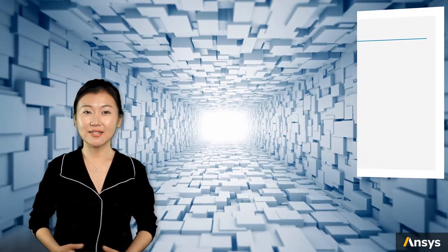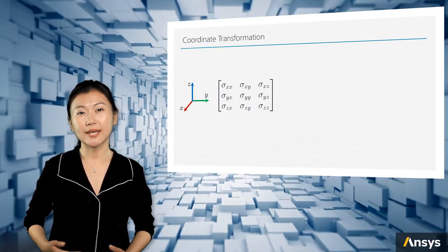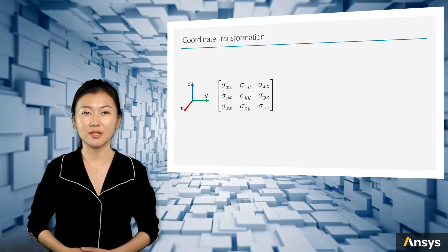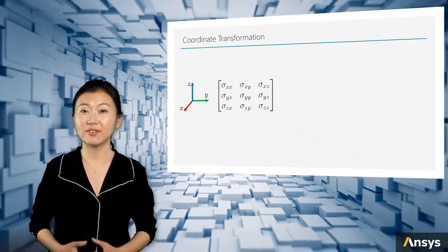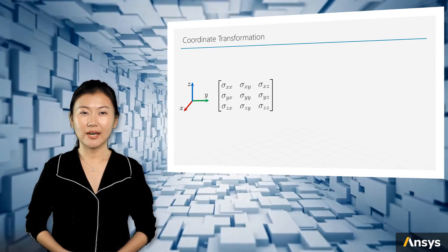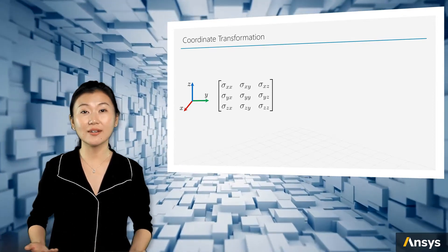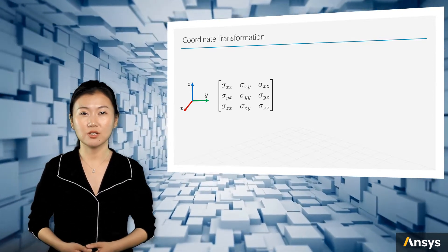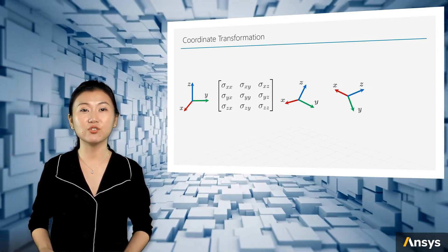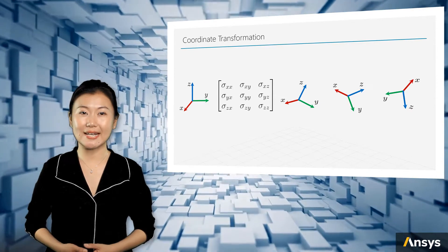We have learned that the stress state of a material point can be captured by a tensor with nine components. Now let's have a closer look at these nine values. In fact, the nine values of a stress tensor are not absolute. With a different coordinate system, the values will be different, but still can represent the same stress state.